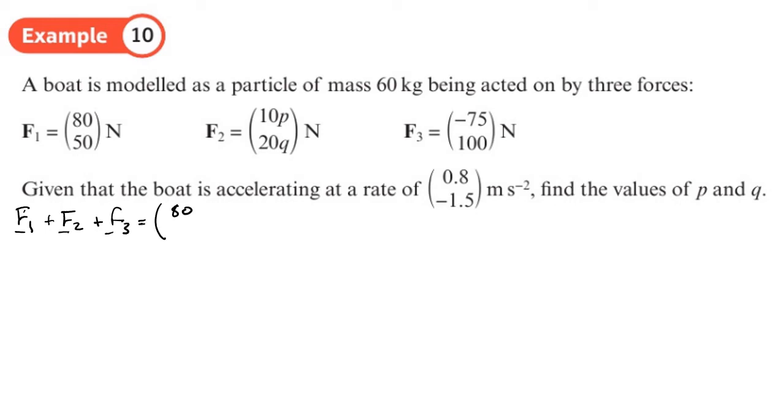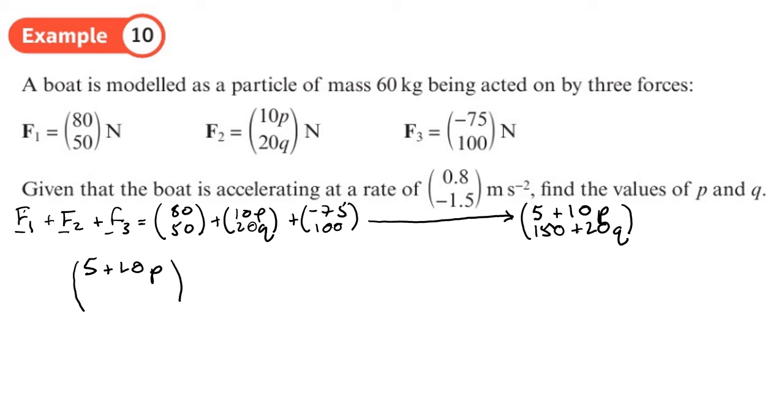So that's going to be 80, 50 plus 10p, 20q plus negative 75, 100. So what does that give us as a resultant force? So 8 minus 75, that's 5 plus 10p, and then 150 plus 20q.